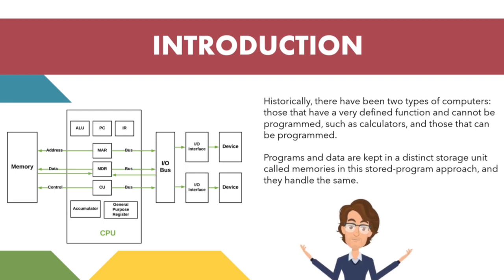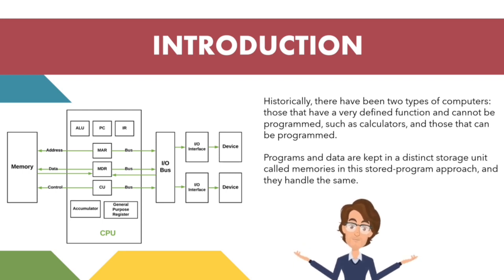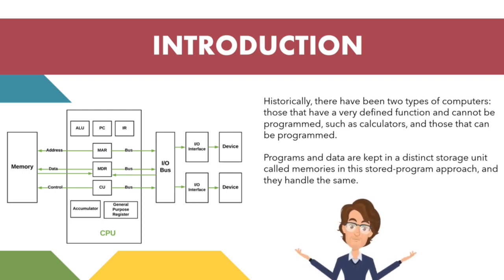The basic representation of Von Neumann architecture includes an input device, output device, and CPU. Within the CPU, there is a control unit, arithmetic logic unit, and registers. The ALU is used for mathematical operations. This is the basic introduction to Von Neumann architecture.